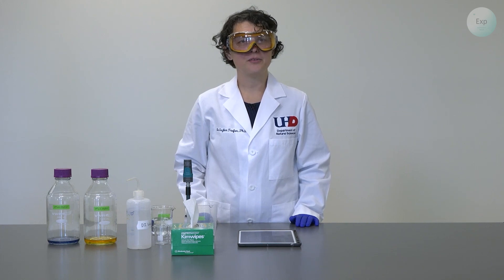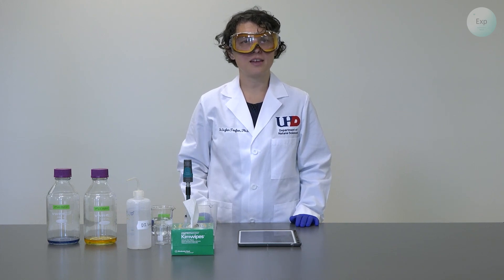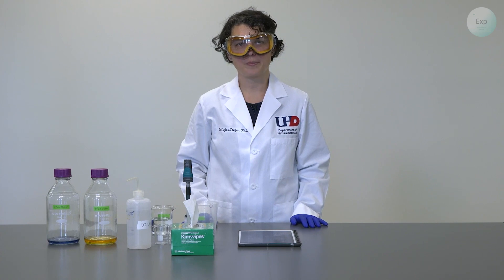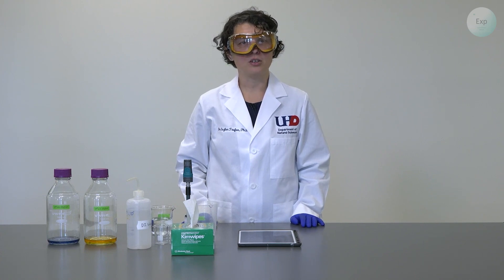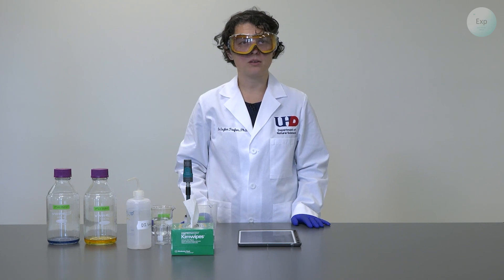To get started, the first thing that we have to do is download the app for the Vernier pH probe, and that is the Graphical Analysis. The app can be found in the Apple Store or the Play Store.